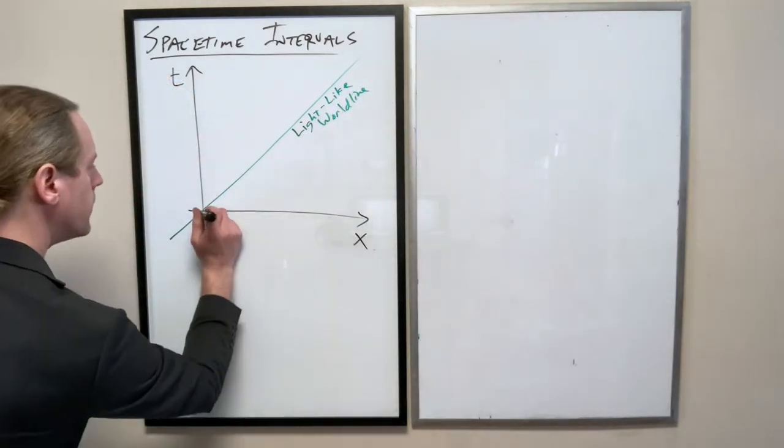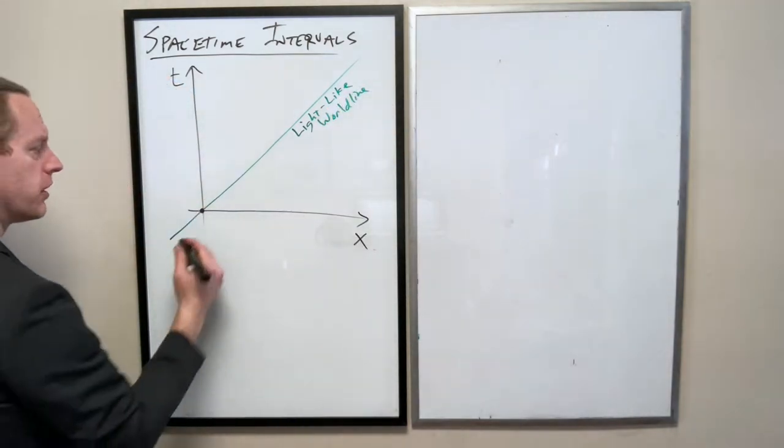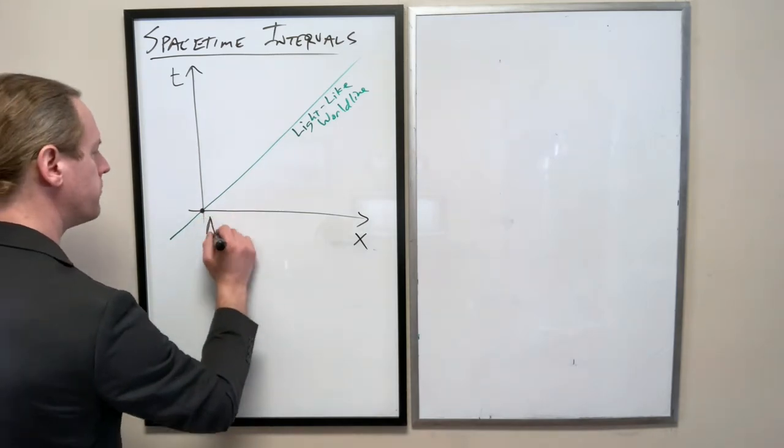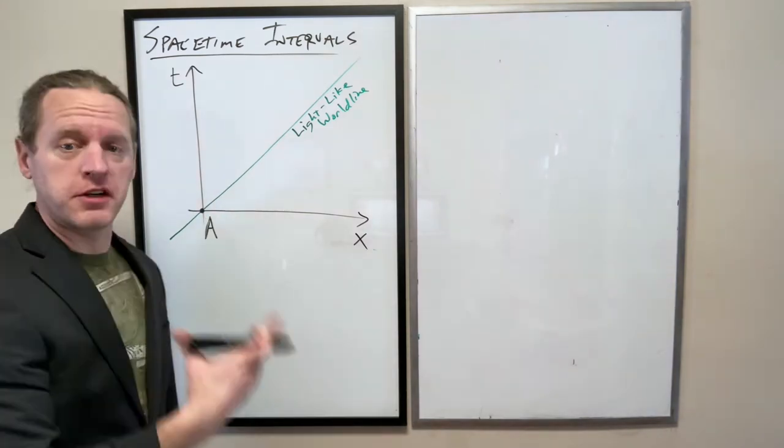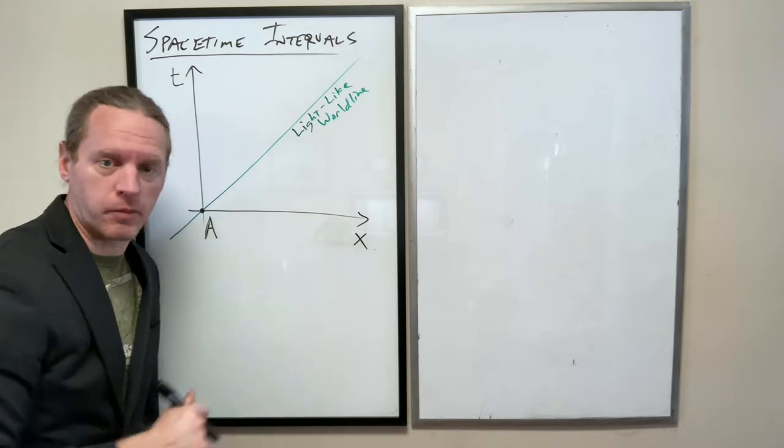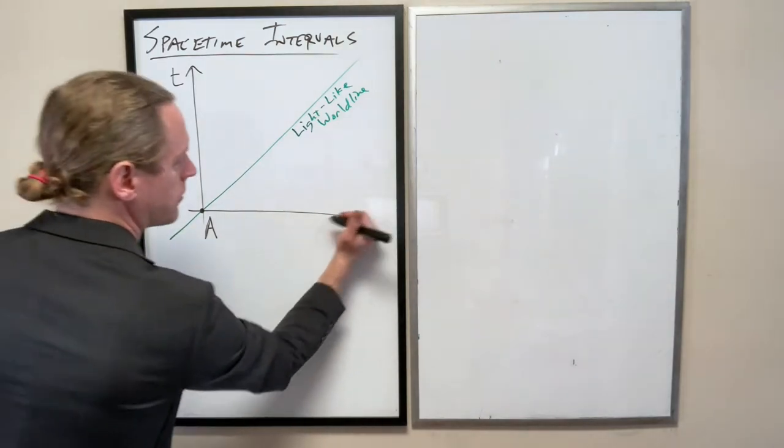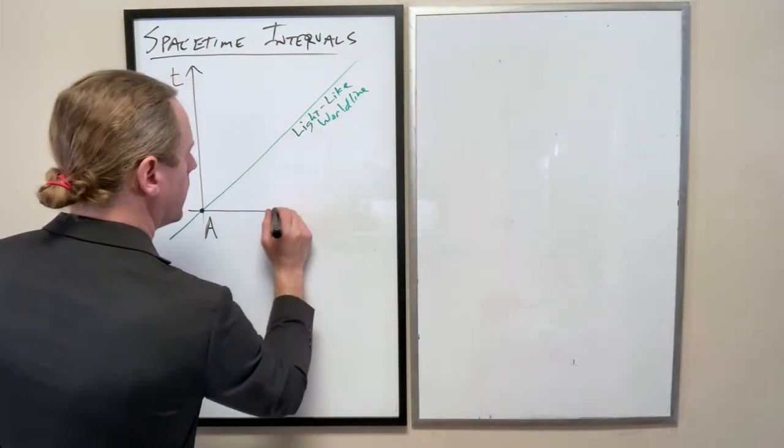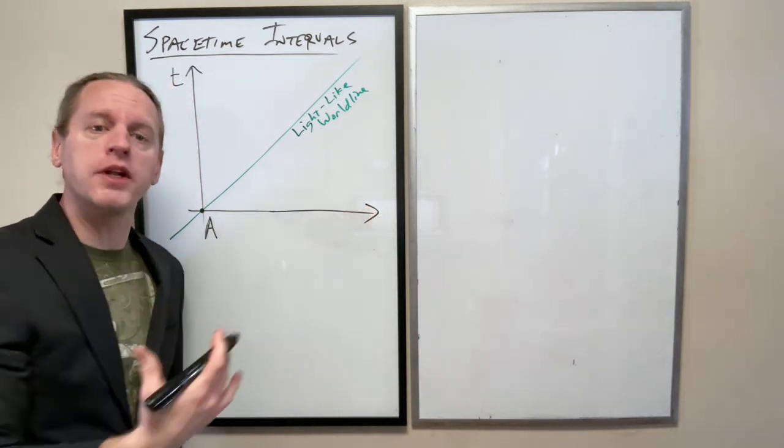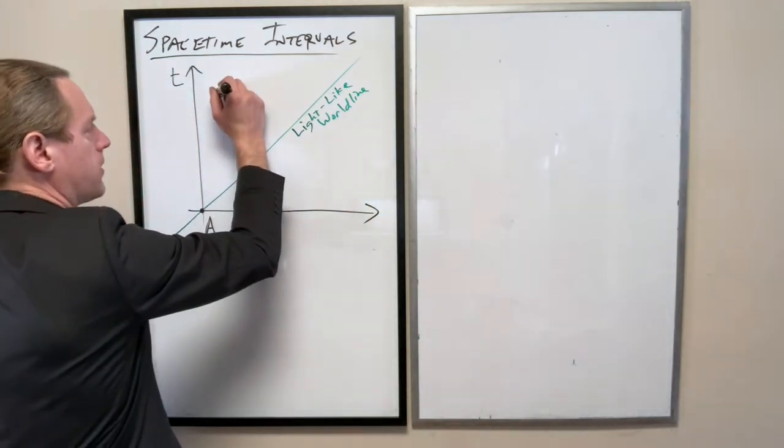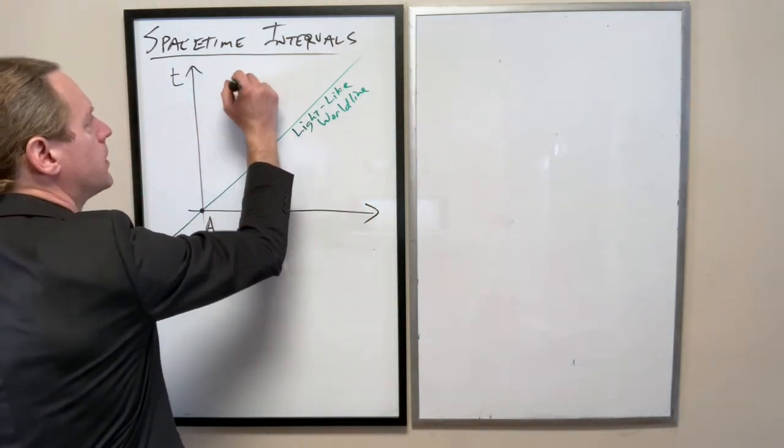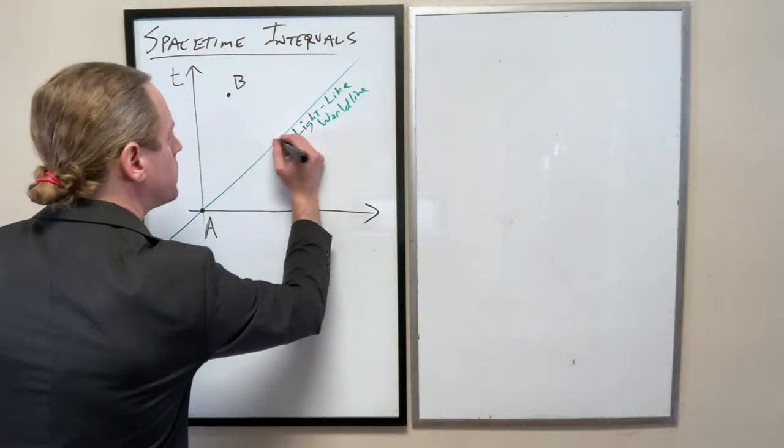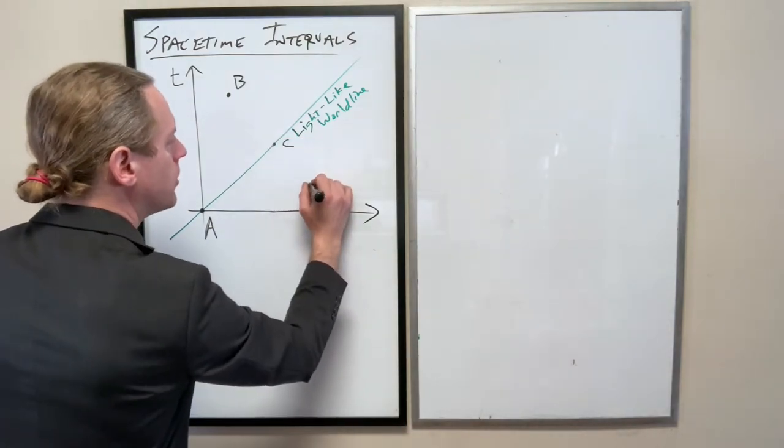And I want to consider two events. Now, for all of these here, we're going to consider this to be event A. So 0, 0, 0, 0 as viewed in our frame S to be clear. And I'm going to consider a couple different events. I'm going to consider event B. I'm going to consider event C and D here.